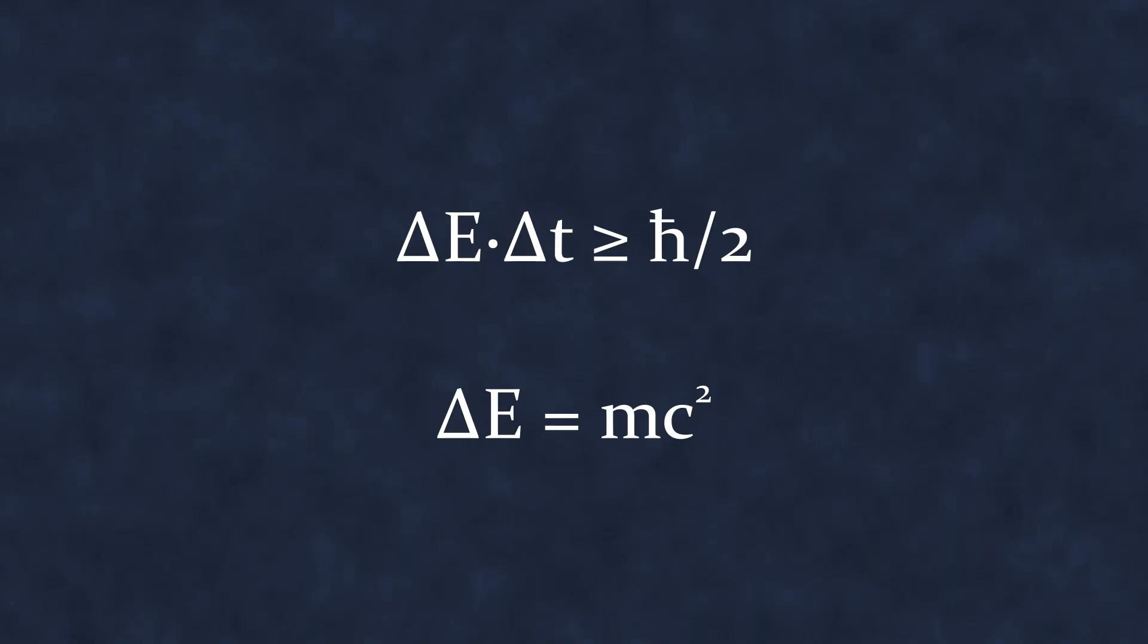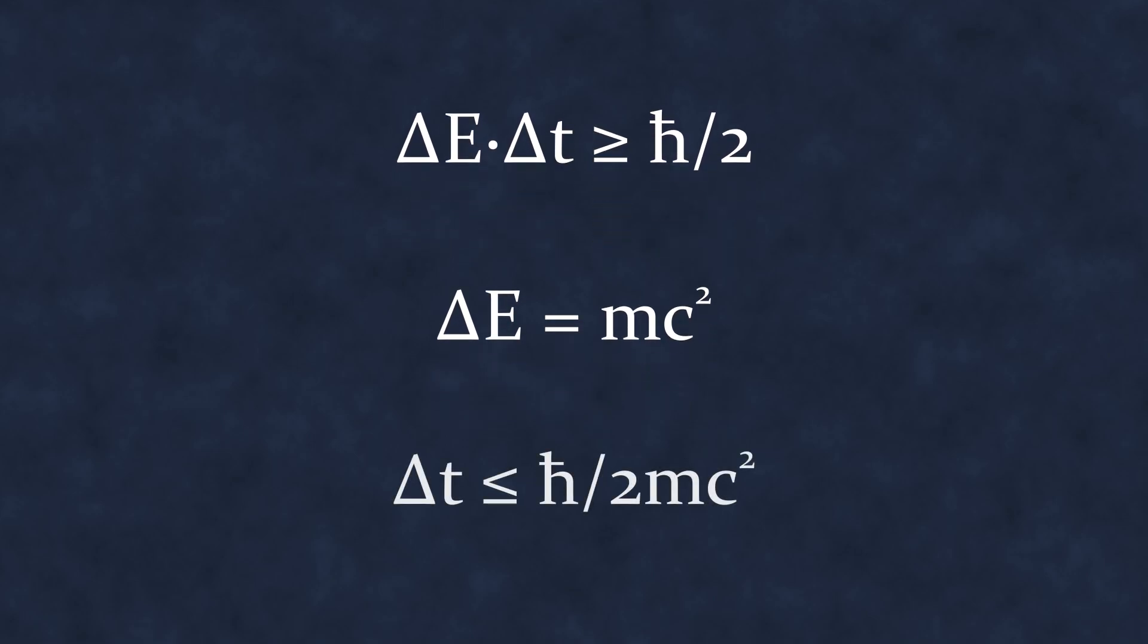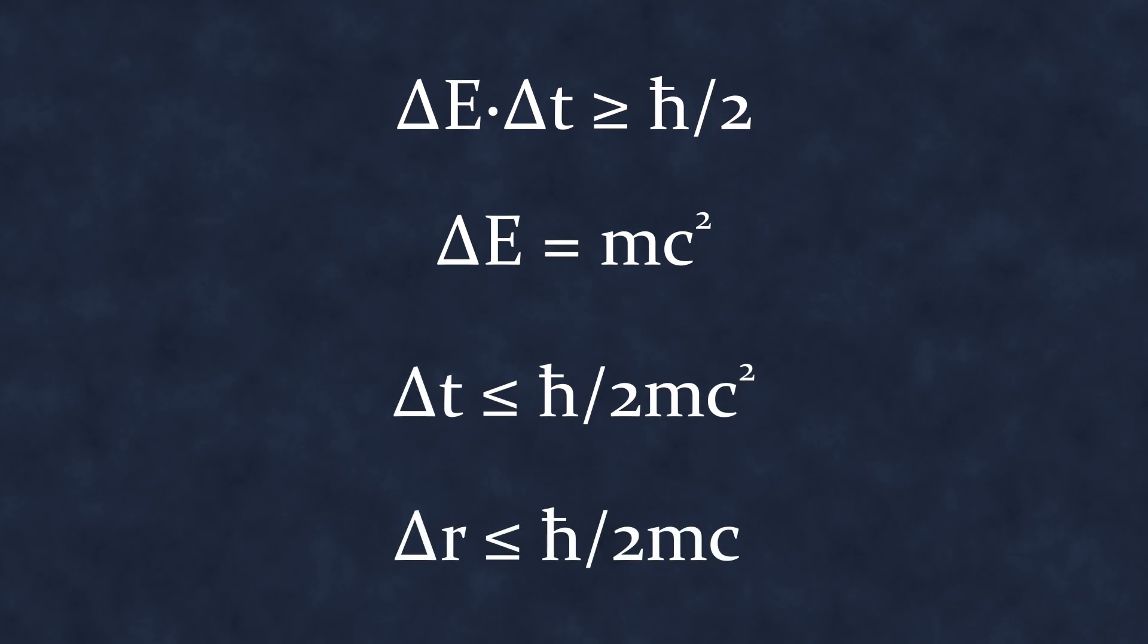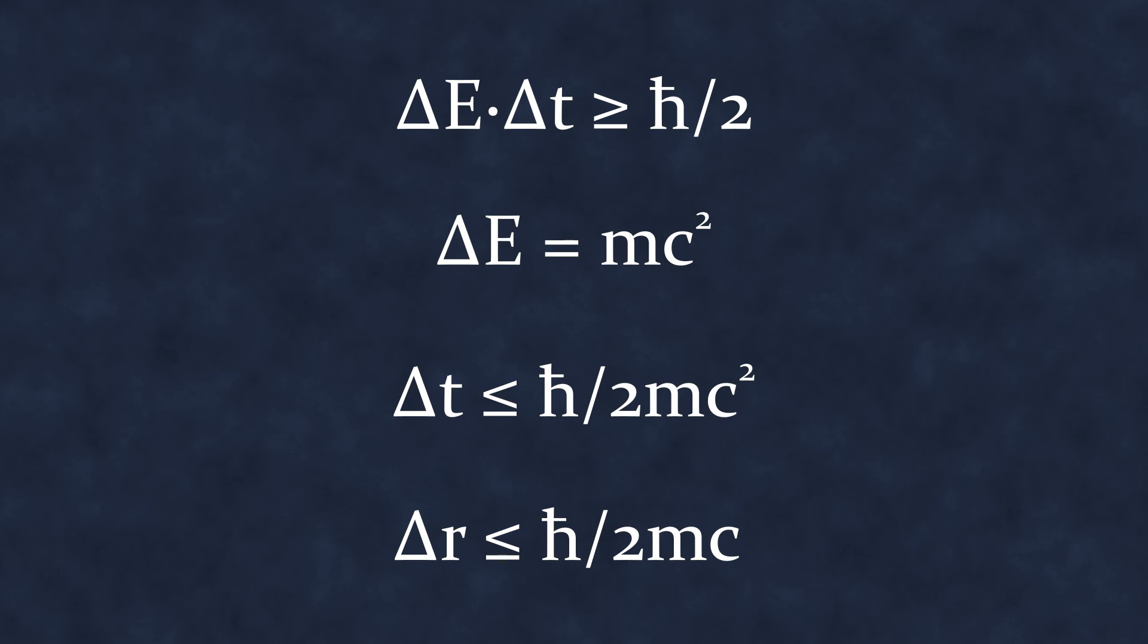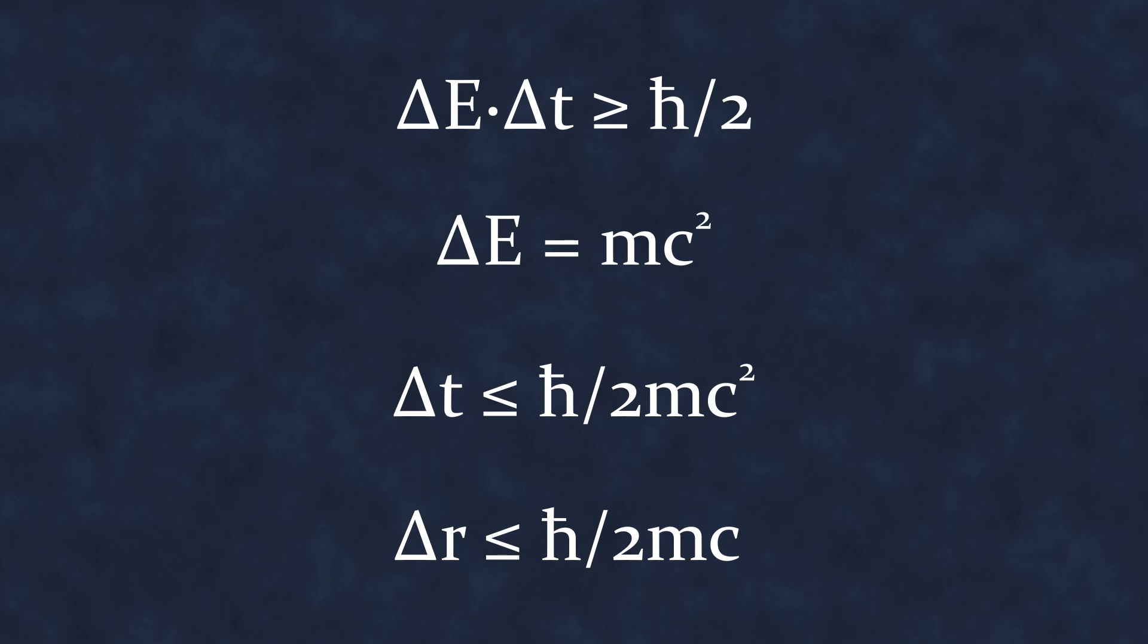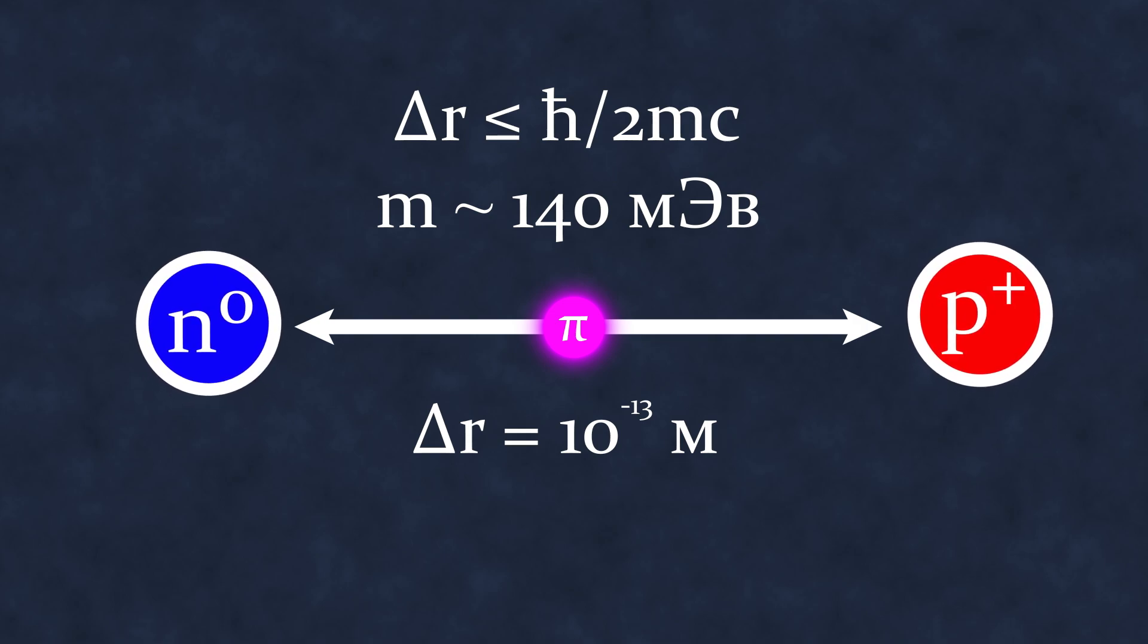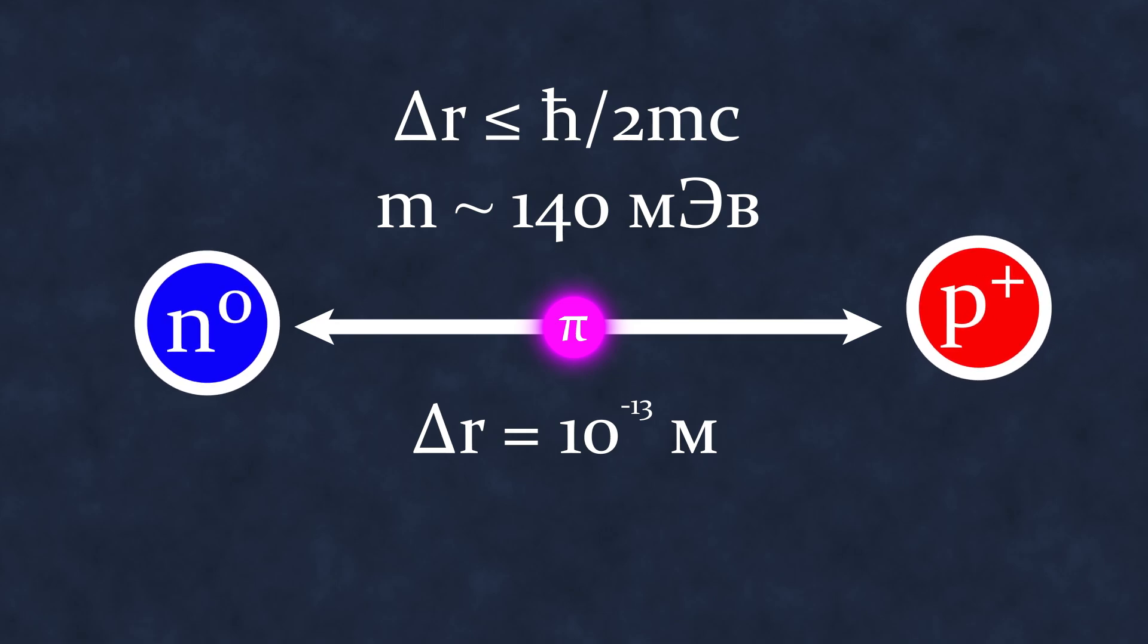They can exist only for a time determined by the uncertainty relation. Any interaction involving the exchange of such particles must occur within a characteristic time less than this time, and over characteristic distances equal to this time divided by the speed of light. That is why electromagnetic interaction carried by massless photons occurs at any distance, while the strong nuclear interaction within the atomic nucleus, whose carrier is pions with a mass of about hundreds of millions of electron volts, acts over distances of about 10^-13 meters.